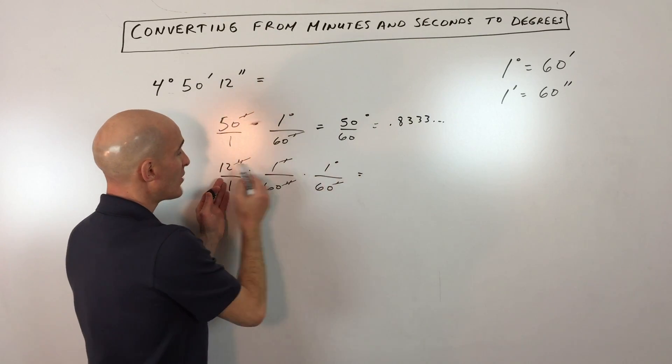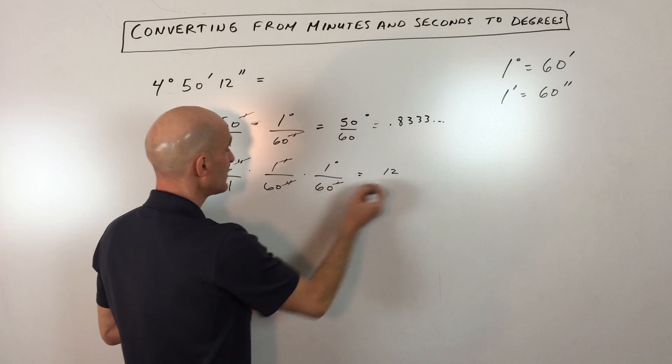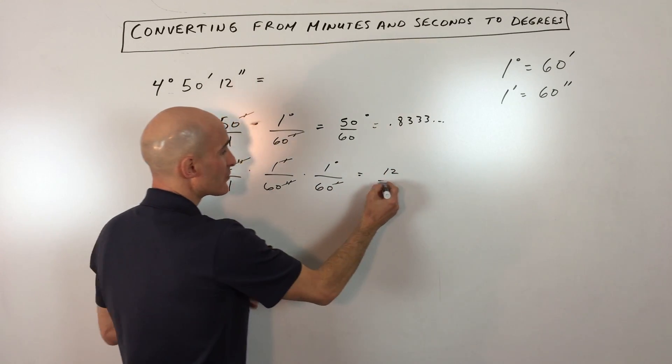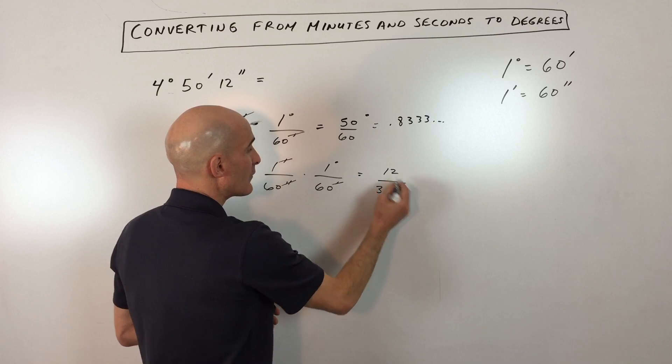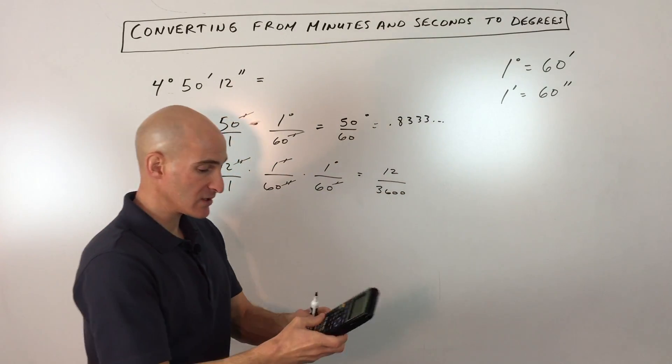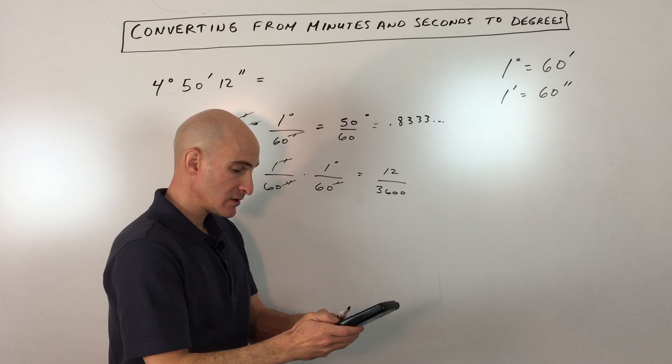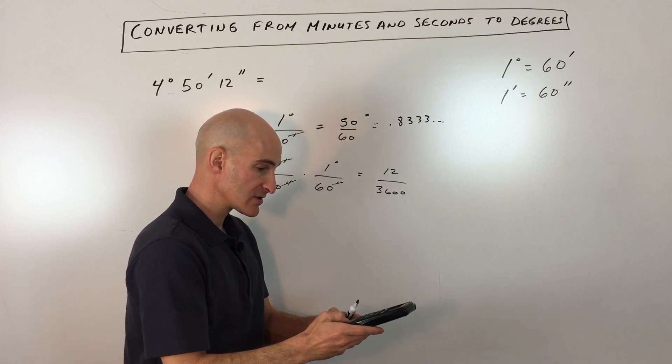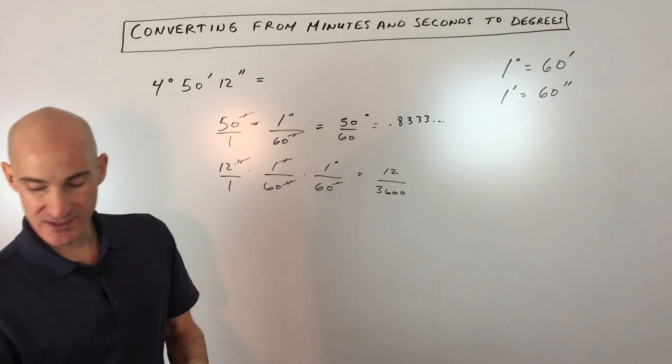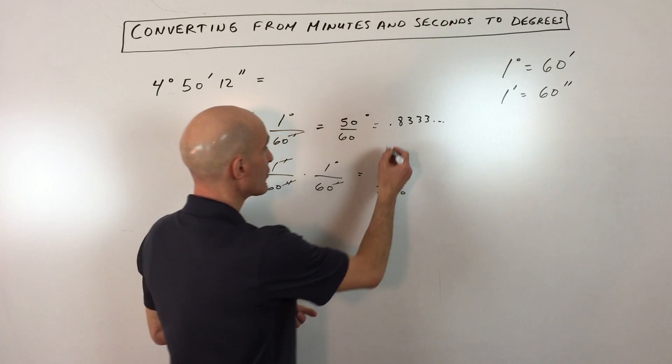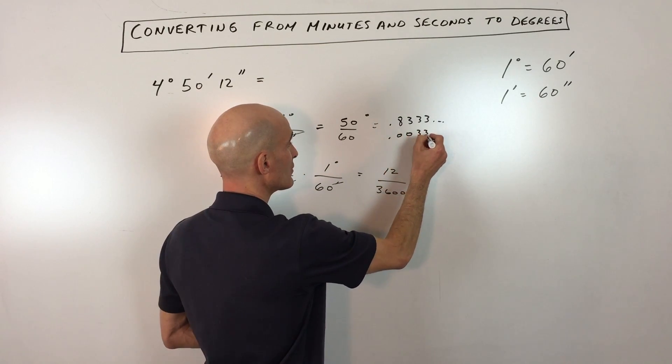So you can see if we multiply across, we multiply all the numerators, we get 12. All the denominators, we get 3,600. And if we divide those, let's see what we get in decimal form. So we get 12 divided by 3,600, which comes out to 0.00333 repeating. So 0.0033 like so.